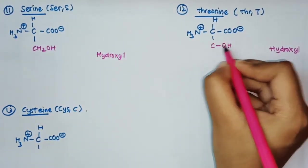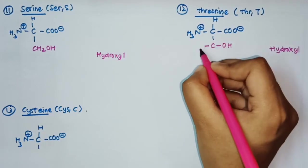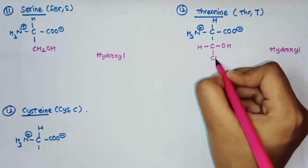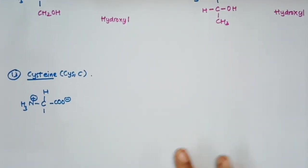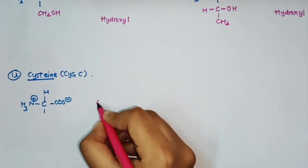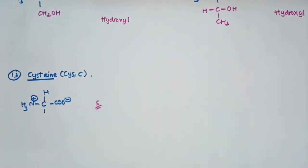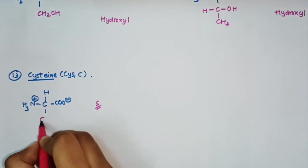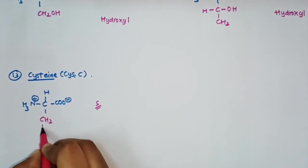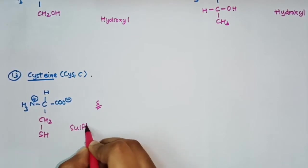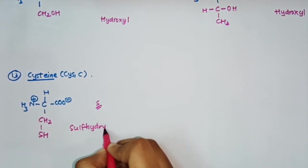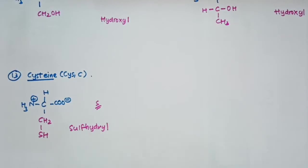The thirteenth amino acid is cysteine, which is also a sulfur-containing amino acid. So methionine and cysteine are the two sulfur-containing amino acids. In cysteine, a sulfhydryl (–SH) group is present, whereas in methionine a thioether group is present.